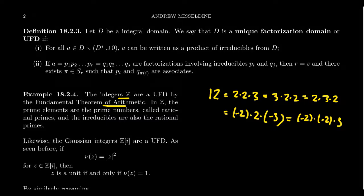There will be other UFDs we discuss, and those will also have irreducible and prime elements. To keep things clear, when we talk about the prime numbers of the integers, we'll typically call them the rational primes. They're called rational primes because the field of fractions for the integers is the rational field — the prime field of characteristic zero.